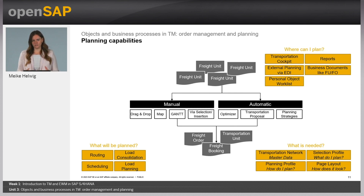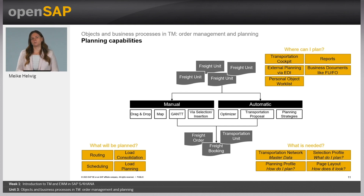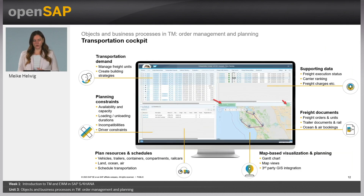As a result of this planning process, we create freight orders, freight bookings, or transportation units. These objects we will discuss in the next unit, because these objects are our execution documents, which are quite important for the execution integration with warehouse management and also with the carrier communication. The most important transaction is the transportation cockpit. This cockpit is the most powerful transaction in TM. I will jump to the next slide to show you one example of the cockpit.